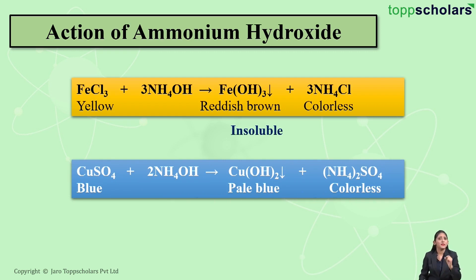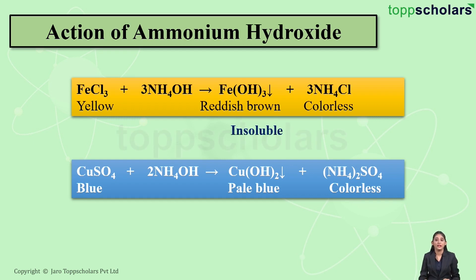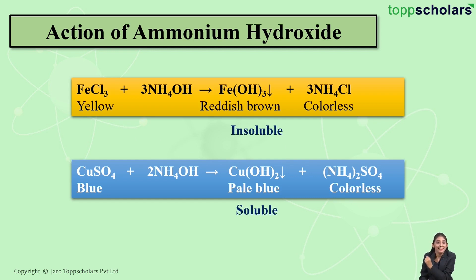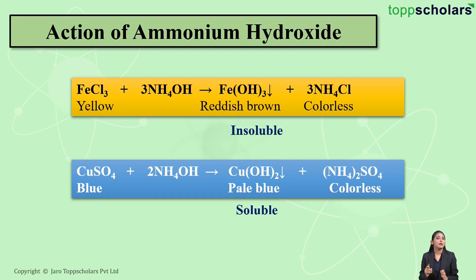Let us move on to copper sulfate, which is blue in color. If I add drops of ammonium hydroxide into this solution, it results in the precipitation of copper hydroxide — a pale blue precipitate — along with ammonium sulfate which is colorless. This precipitate of copper hydroxide is soluble in excess ammonium hydroxide; it dissolves when excess is added. So if you get a pale blue precipitate that is soluble in excess ammonium hydroxide, the metal ion present is Cu²⁺.